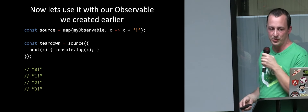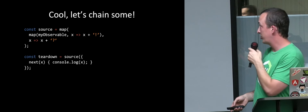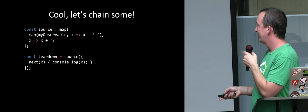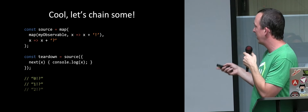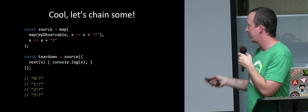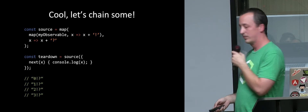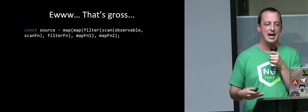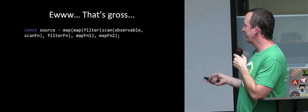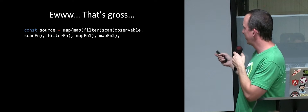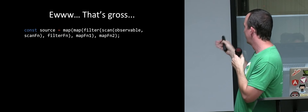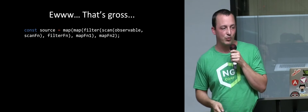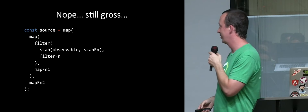Let's use this mapping operator on our observable function. We've got map, calling it on my observable, and we're mapping it to add an exclamation point to the end. So we'd log out zero!, one!, and so on — this actually works. But it gets really gross when you have a lot of operators — map, filter, scan, all these things. You end up building things out to the right and it's not easy to read. Scan happens first, then filter, then map, then another map. Maybe we can format it — nope, still gross.